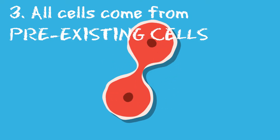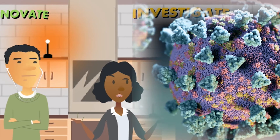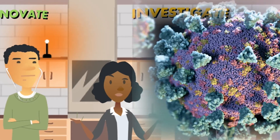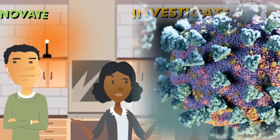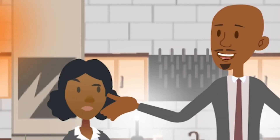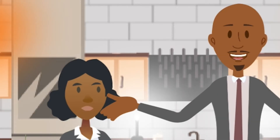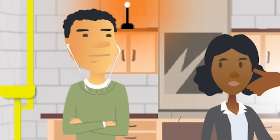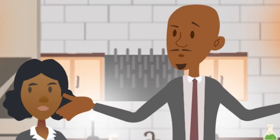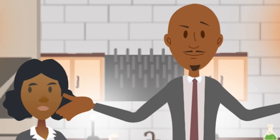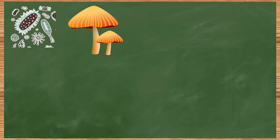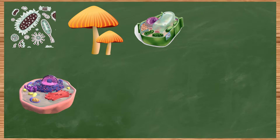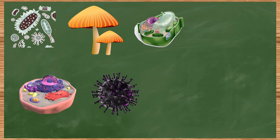Cells are the fundamental unit of life and they all come from other cells. Well, the picture of coronavirus I just saw doesn't look all that different from bacteria. It's not about what it looks like on the outside — it's about what's on the inside, or more so what's NOT on the inside.